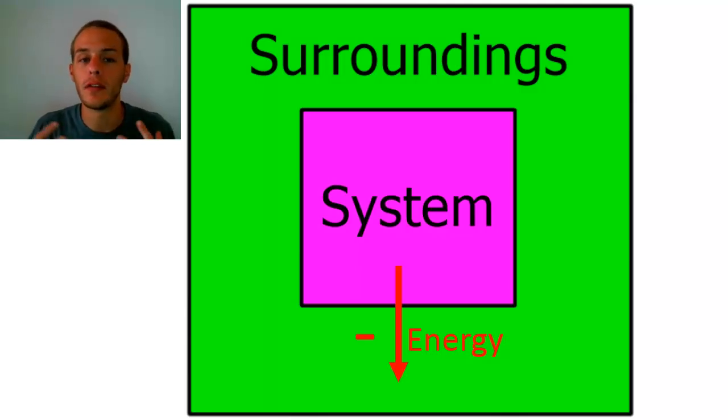Okay, so this is the sign convention that has been adopted by scientists. I don't know if there are any scientists that do it the opposite way. Most of them do it this way, where if the system gains something it's positive, and if the system loses something that's considered negative.